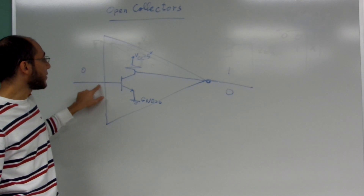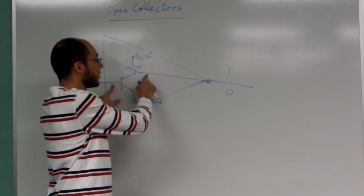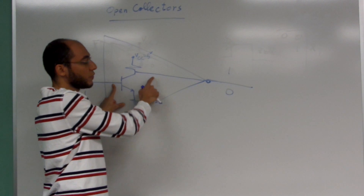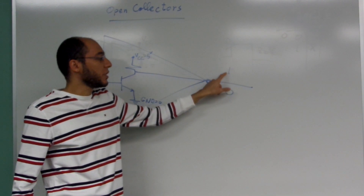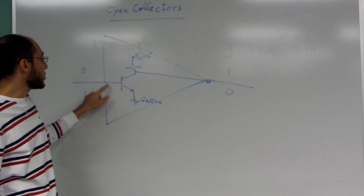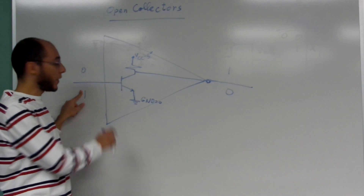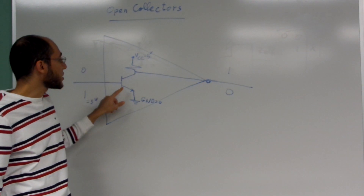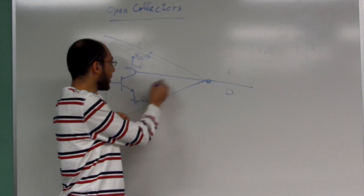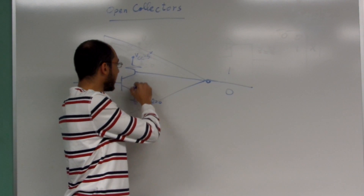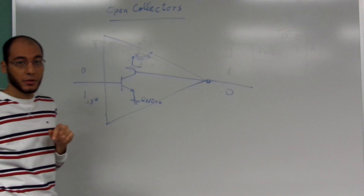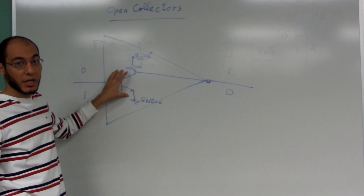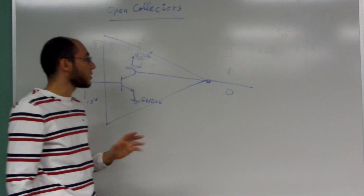Whenever we put zero volts at the input, this transistor is designed so that the output becomes close to five volts — this is why you read a logic one. And when the input is a logic one, which is equal to five volts, this transistor becomes connected to ground — a short circuit — and a logic zero shows up at the output.